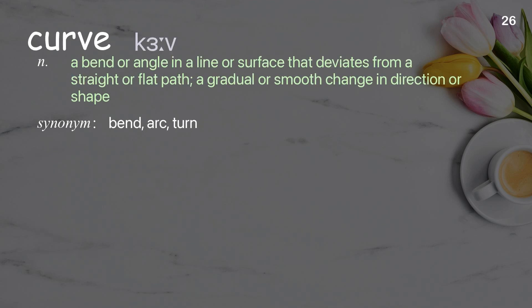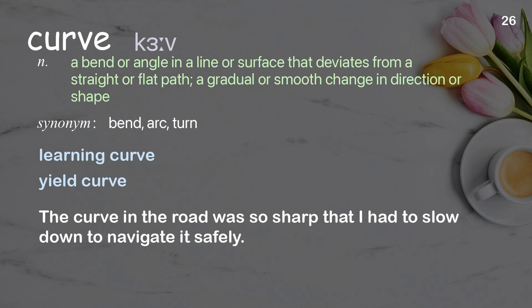Curve: A bend or angle in a line or surface that deviates from a straight or flat path; a gradual or smooth change in direction or shape. Examples: Learning curve. The curve in the road was so sharp that I had to slow down to navigate it safely.